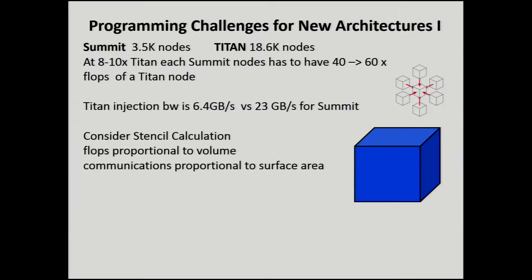If you look at a stencil calculation, the flops are proportional to a volume — let's assume we've got a cube. The communications are proportional to the surface area. So if the raw compute power is going to be 40 to 60 times greater, how much is the communications going to grow for a stencil calculation on that cube? The bandwidth requirement is going to be about three times more.